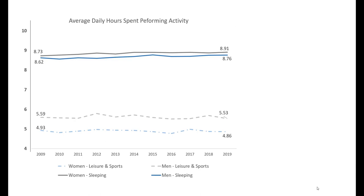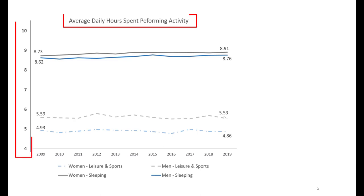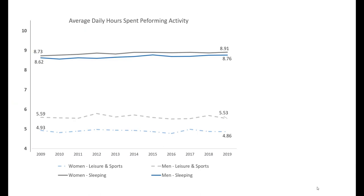The results here show from 2009 to 2019 the average number of daily hours spent by men and women engaging in these activities. What we see is that both men and women are spending a little bit more time sleeping. On the other hand, the amount of time spent on leisure and sports activities has remained relatively flat, if not declined a bit, for men and women. Based on these results, if we think that sleeping is tightly correlated with happiness, we might suspect that people are a bit happier. On the other hand, if leisure and sporting activities are associated with happiness, we might suspect that people aren't quite as happy as they were in 2009.